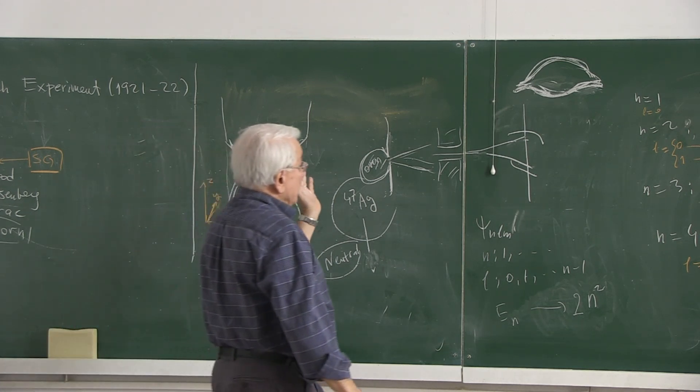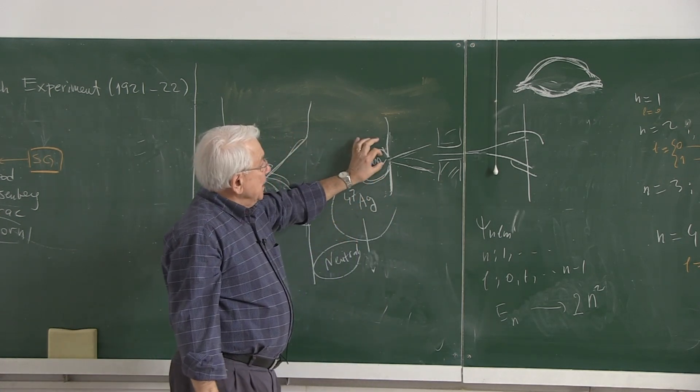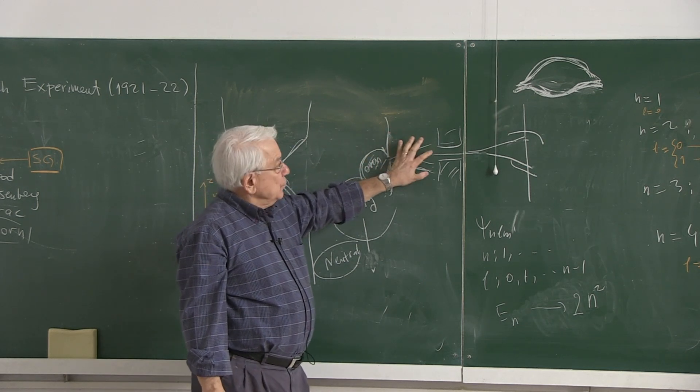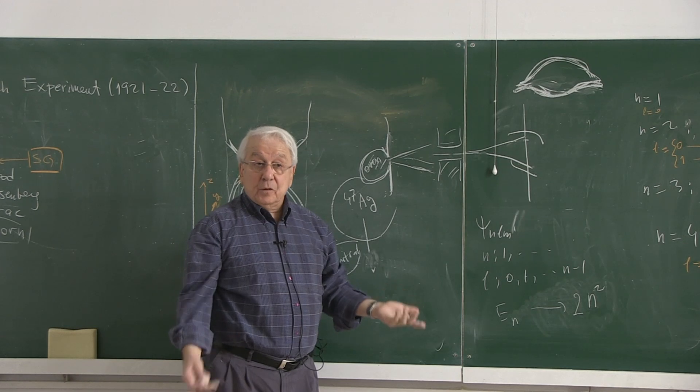This silver atom, neutral, heated, hot atoms. And it's collimated, sent through this gadgetry. And it's split. Let me explain why it is split. In the first place, there's again a semi-classical argument.